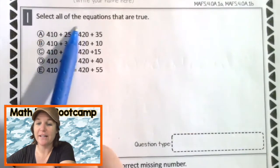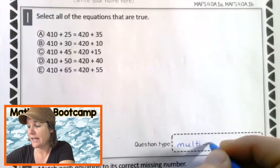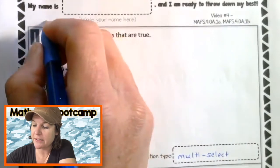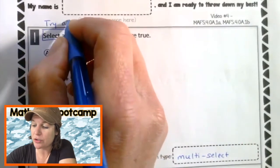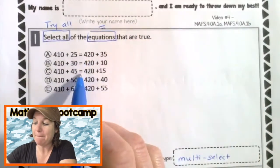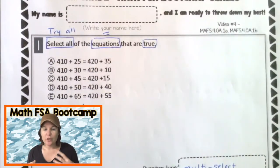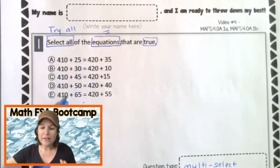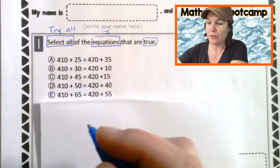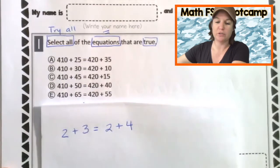Number one says select all of the equations that are true. Well, right away, we know that this is a multi-select problem. There's probably going to be more than one answer here. And if I'm annotating my text, it says select all. So I'm going to work out all or try all of the equations. That means that there's an equal sign and boom, there is an equal sign that are true. So what do we know about equations? We know that when there is an equal sign, it means that one side should equal the other. They need to be balanced.